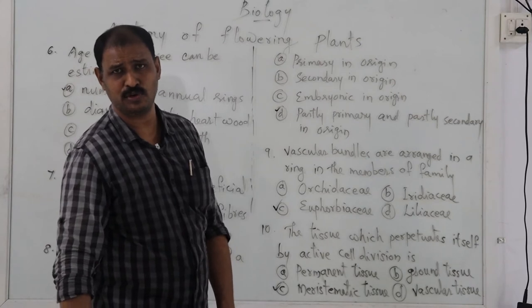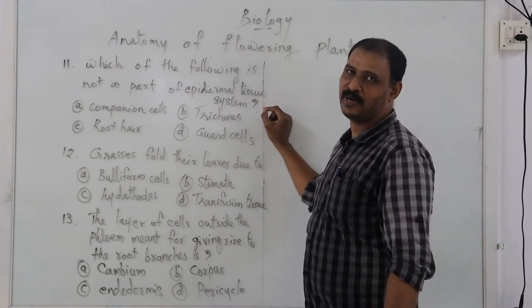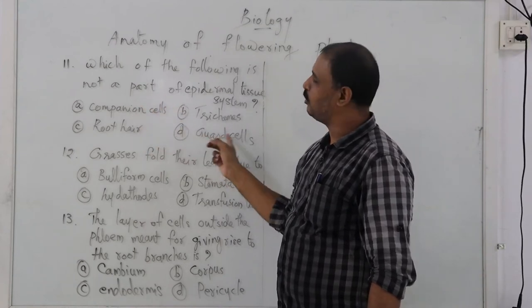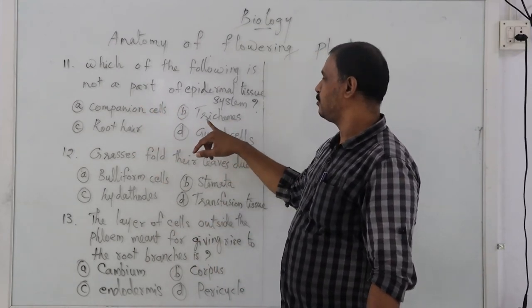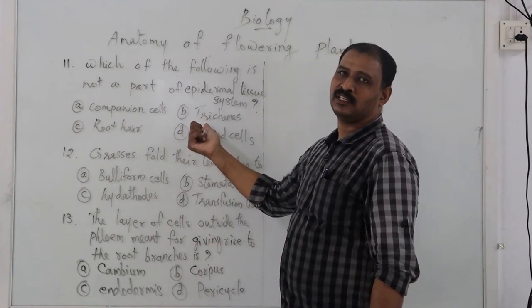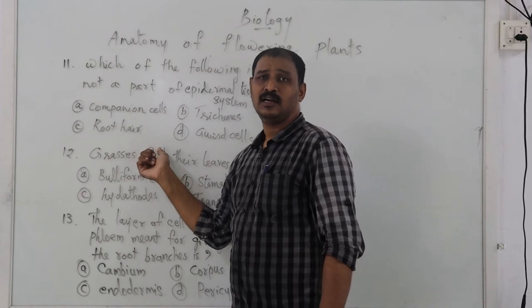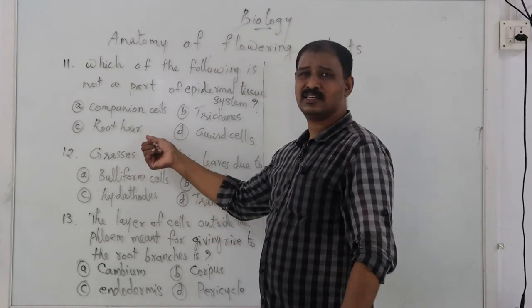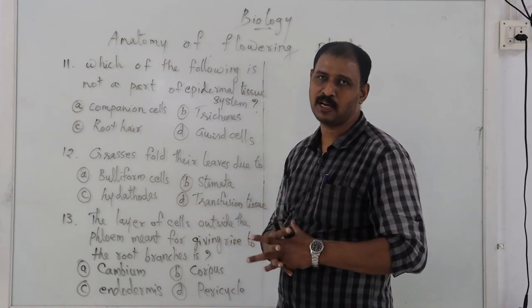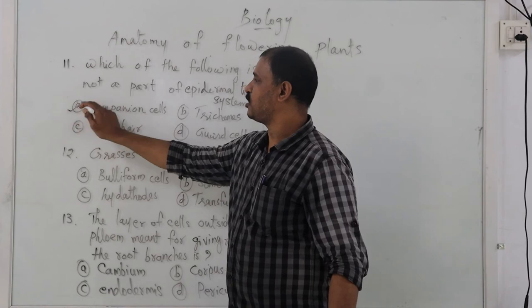Which of the following is NOT a part of the epidermal tissue system? The epidermis is the outermost layer of plant parts. Parts of the epidermal tissue system include trichomes, root hair, and guard cells. The correct option is companion cell — companion cell is a component element present in angiosperm phloem, not part of the epidermal tissue system.